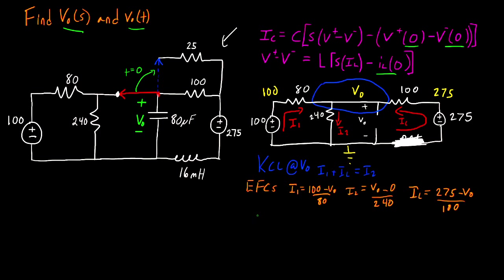For the sake of time, I'm going to skip solving this by hand and put this into a system of equations calculator. The result is that I_L = 5/4. This is the initial condition of my inductor. For my capacitor, the initial condition is the node voltage across it, which happens to equal V_o because V_o is referenced across my capacitor. In this case, V_o = 150 volts. These are the only two pieces of information we need to get out of the DC analysis.